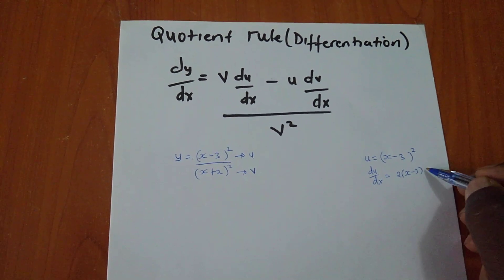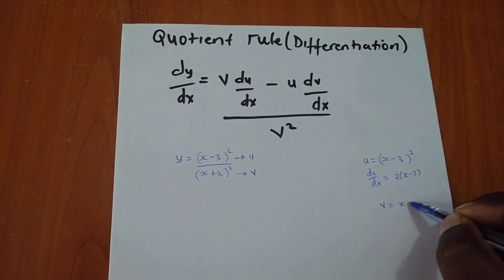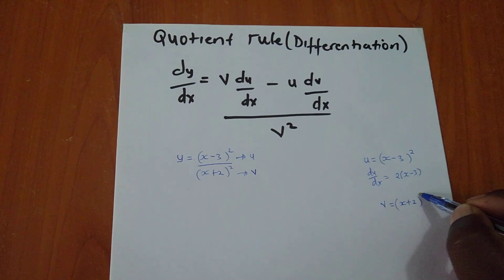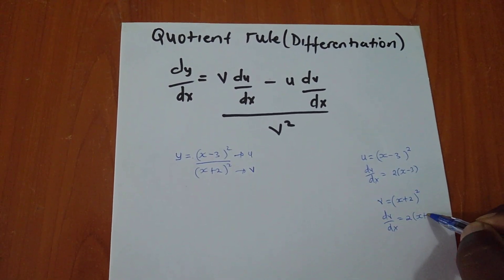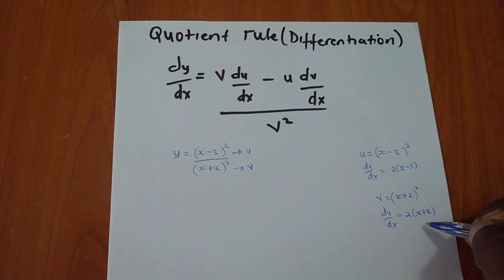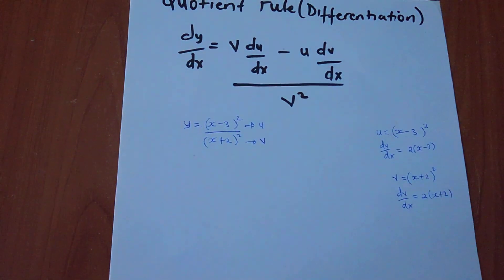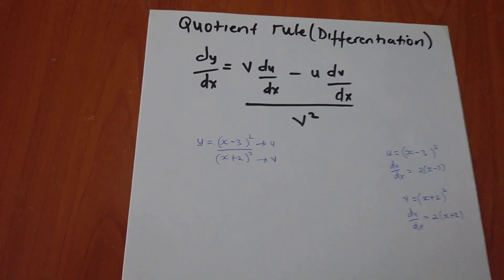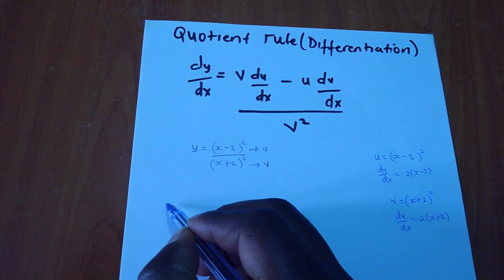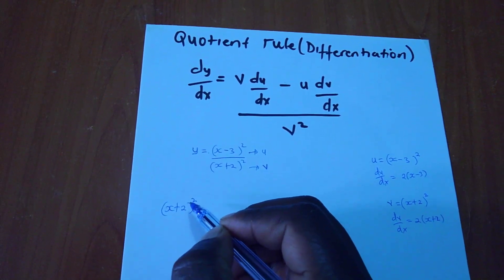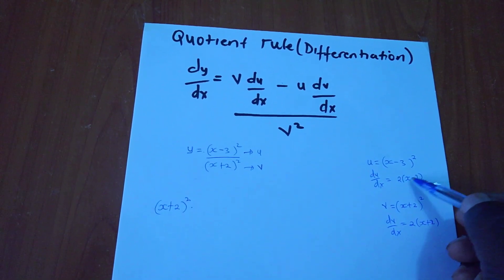So this is my dv/dx. Since I have whatever is required, now I can start to put into the formula. So what's my v? My v is, following the formula, (x plus 2) squared.